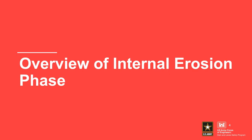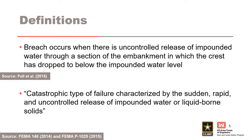Overview of the internal erosion phase. Breach is the fourth and final phase of internal erosion. Felitt Hall 2015 and Eichold Bulletin 164 from 2017 refer to this phase as both breach initiation and breach. Breach occurs when there is uncontrolled release of impounded water through a section of the embankment in which the crest has dropped below the impounded water level. According to FEMA 148, failure or breach is characterized by the sudden, rapid, and uncontrolled release of impounded water.